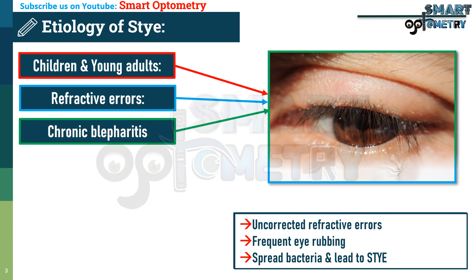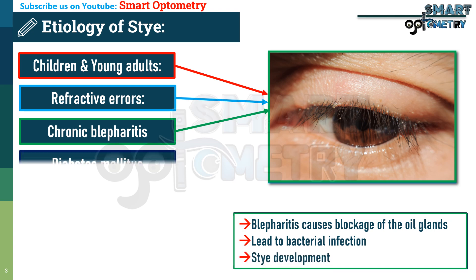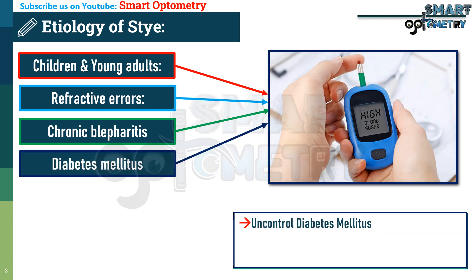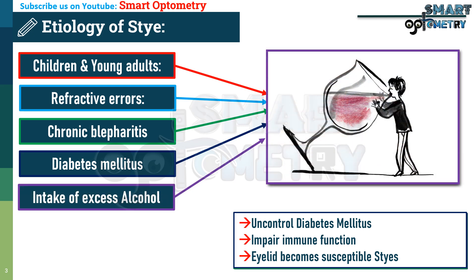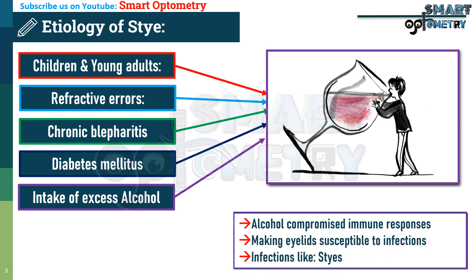Third, chronic blepharitis can cause blockage of the oil glands, which can lead to bacterial infection and stye development. Fourth, uncontrolled diabetes mellitus impairs immune function, making the eyelid glands more susceptible to infections like styes. Fifth, excess alcohol intake compromises immune responses, making the eyelids more susceptible to infection.